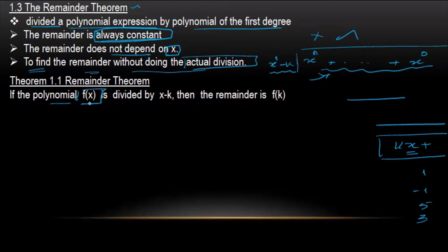For a polynomial, it is divided by x minus k. x minus k. Then the remainder is equal to f of k.